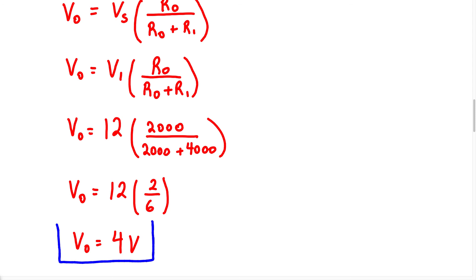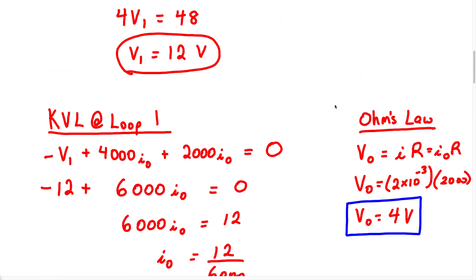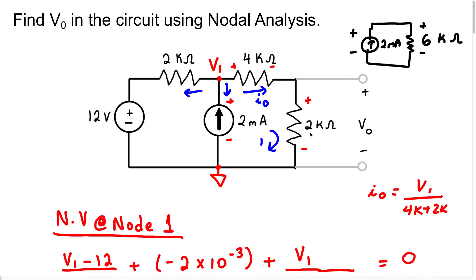This voltage division method was a little quicker. Any way you decide to tackle these problems, as long as you know which technique you're going to use and that technique is applicable to the situation, you will always get the correct answer. For this particular problem, the voltage VO equals 4 volts, which is the voltage across this 2K resistor.